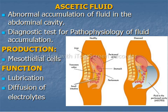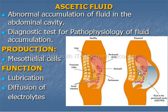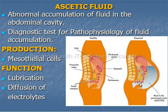Mesothelial cells are the cells of the body that cover the serous cavities and internal organs. We call it peritoneal fluid. When this fluid exceeds 50 ml and abnormal accumulation occurs in the peritoneal cavity or abdominal cavity, we call it ascitic fluid.